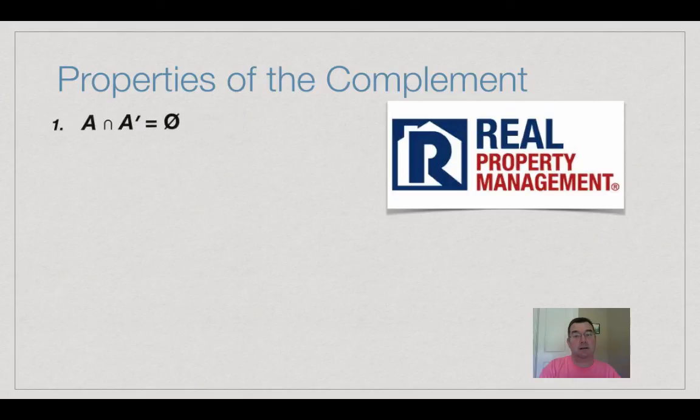Let's talk about some properties of the complement. The intersection of a set and its complement is the null set. There should be nothing in common with those two sets. The union would get you back to the universal set that you were starting with.